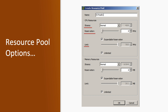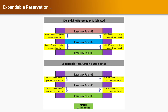Looking at resource pool options, we have CPU resources and memory resources, and within each we have share value, reservation value, and limit. We also have the expandable reservation option. If expandable reservation is enabled, the parent resource pool can give resources to the child and the child can take resources from the parent. But if expandable reservation is not selected, parent resources cannot give resources to the child and the child cannot take resources from the parent.